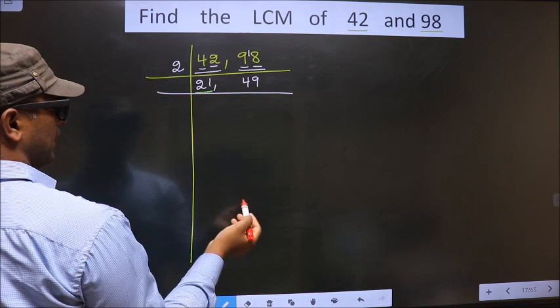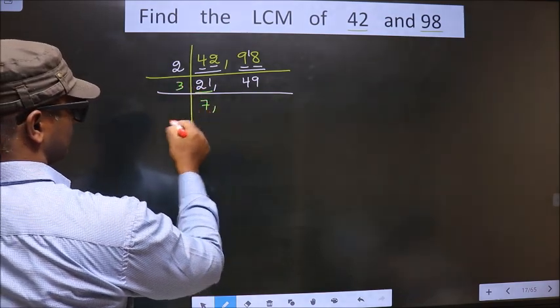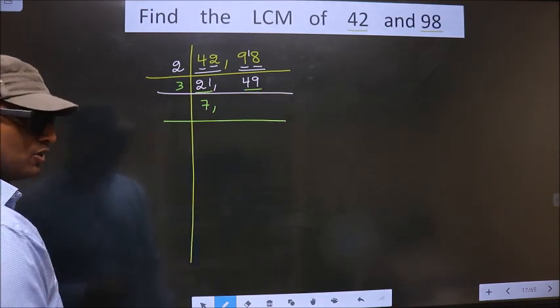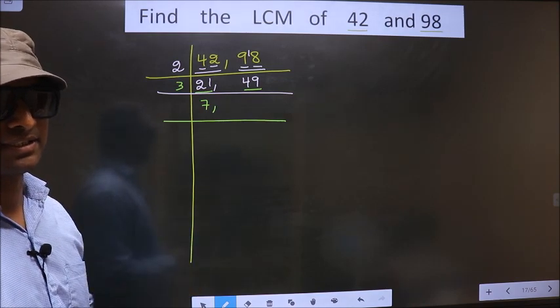Now here we have 21. 21 is nothing but 3 times 7 is 21. The other number is 49. To check divisibility by 3, we should add the digits.